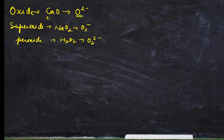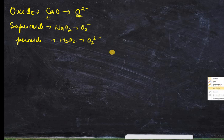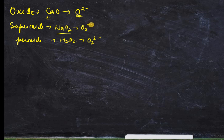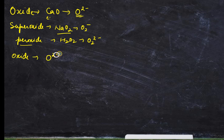Oxide means a formula which has oxygen and some metal. For example, calcium oxide — the overall charge on oxygen is 2 minus. Superoxide is mainly for alkali metals, for example sodium superoxide, and it has O₂ with a minus 1 charge. Peroxide is H₂O₂, which has 2 oxygens with a 2 minus charge shared by the 2 oxygens.